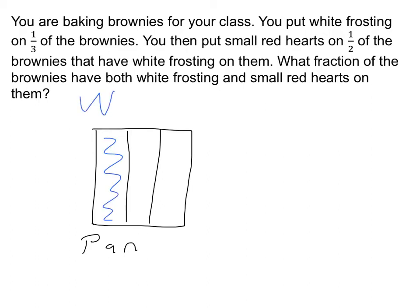There are my brownies with white frosting. Then it says you put small red hearts on a half of the brownies that have white frosting. We're going to take this piece that has white frosting, divide it up into two equal pieces, and put red hearts on one of those pieces.